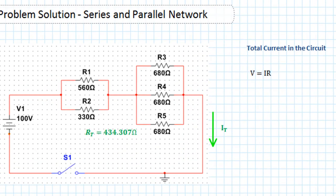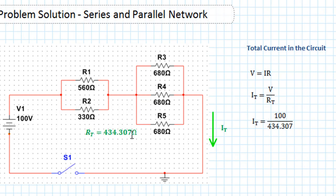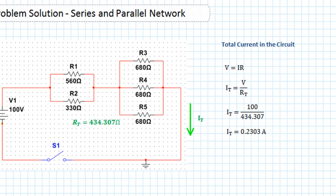To work out the total current IT we use Ohm's law: V = IR. We know V and R, so we transpose to get IT = V / RT. Substituting in the values — V = 100 volts, RT = 434.307 ohms — we can calculate the total current, which comes out at 0.2303 amps.